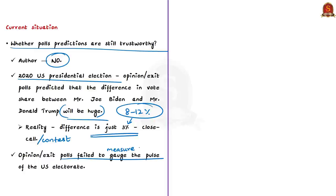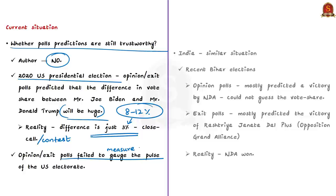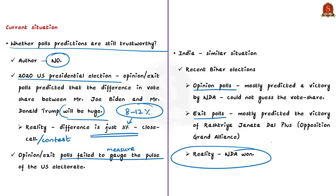In India the situation is almost the same. In the recent Bihar elections, opinion polls mostly predicted a victory for the National Democratic Alliance but could not guess the vote share. Exit polls mostly predicted victory for the RJD-led opposition Grand Alliance, but actually the NDA won. It is clear that poll predictions have miserably failed on many historical occasions — sometimes failing to project the winner, and sometimes failing to foresee the margin of victory.